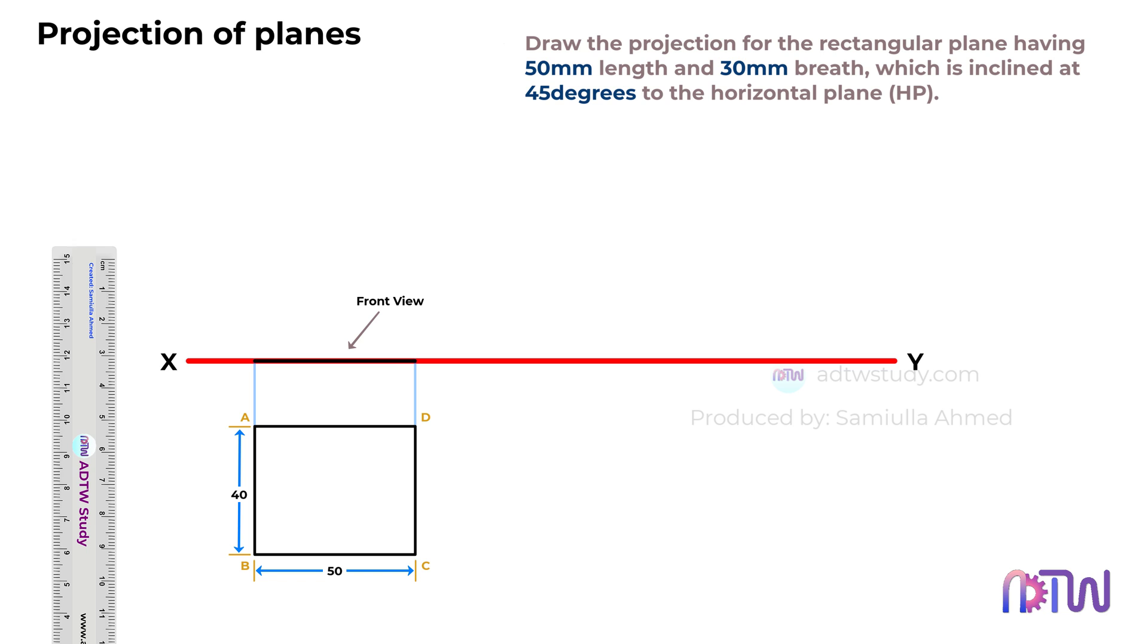Remember to label these projections. The front view is denoted with dashes, A dash, B dash, C dash, and D dash, and the top view without dashes.